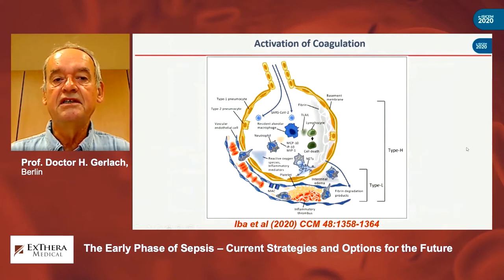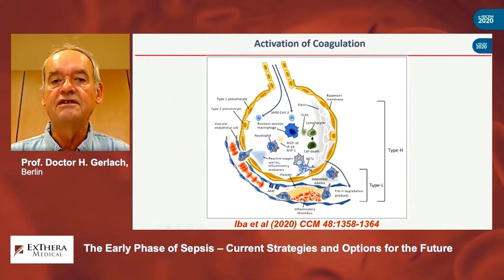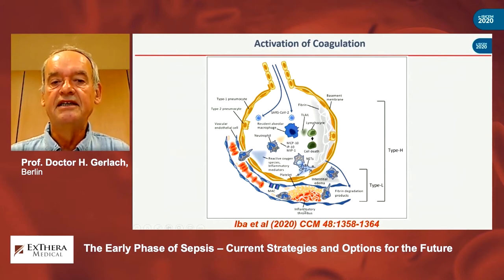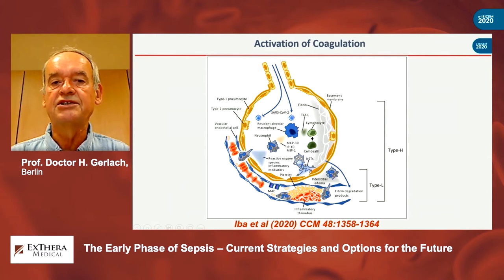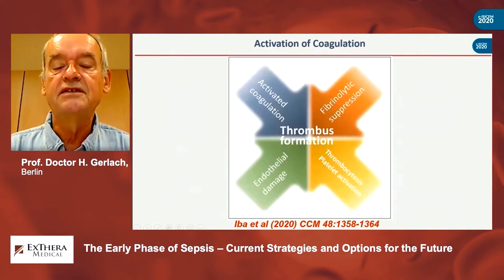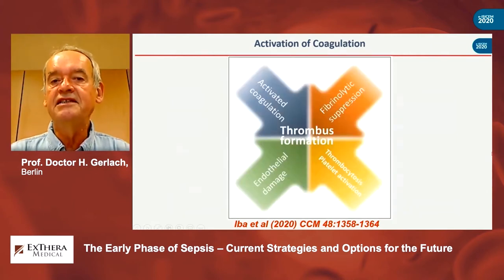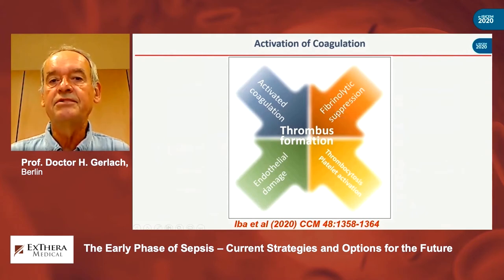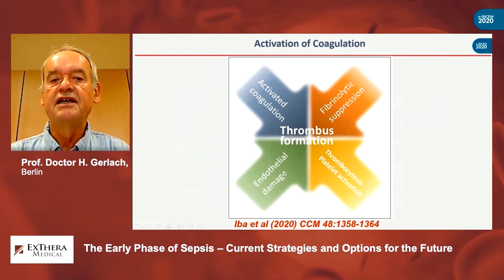Here you see once again that by the SARS-CoV-2 virus, several mechanisms were induced, which then induce endothelitis and inflammatory thrombus within the microvasculature. You also see these mechanisms: activated coagulation, fibrinolytic suppression, platelet activation, and the basis of all — endothelial damage.